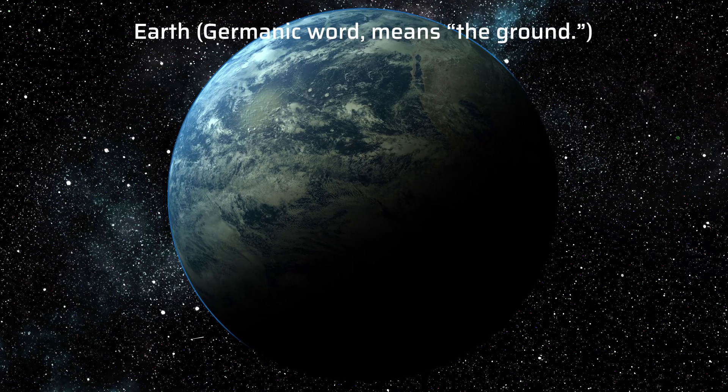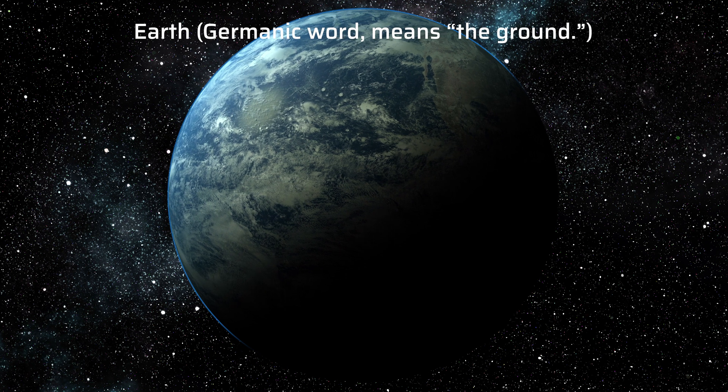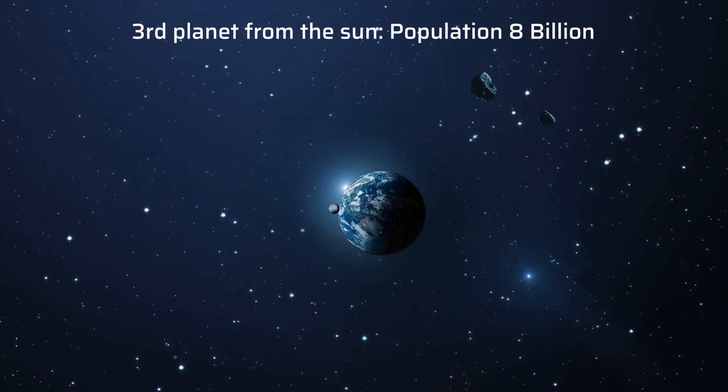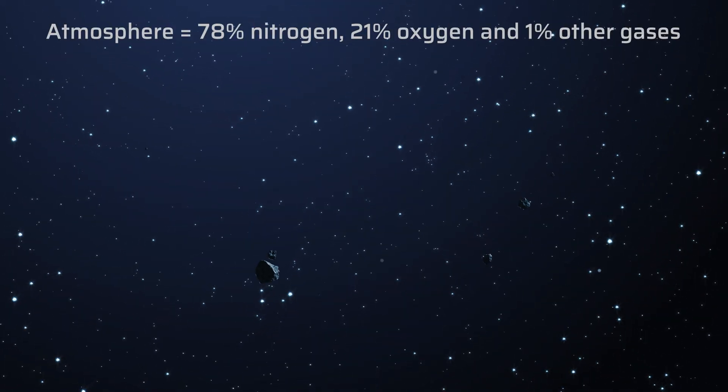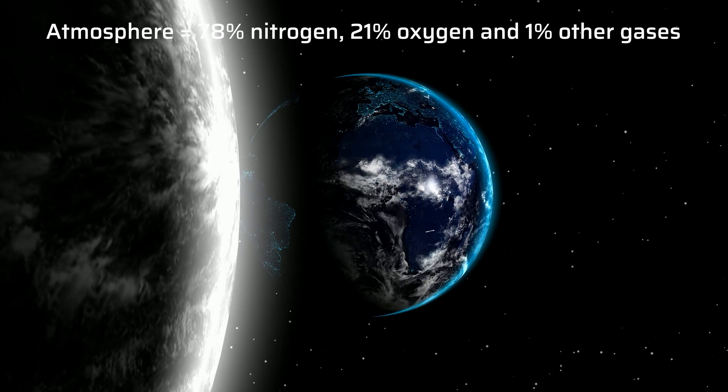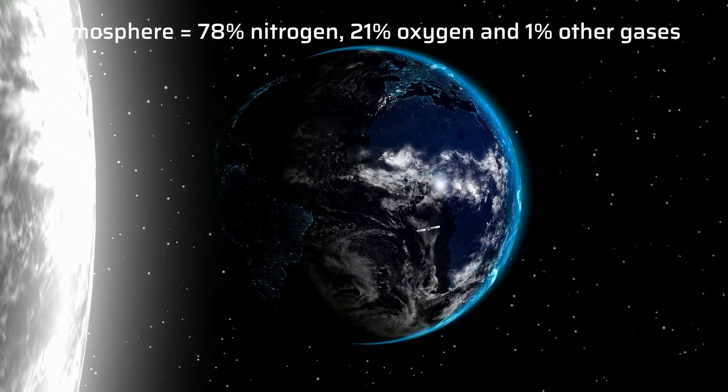Earth. It is a Germanic word which means the ground. It is the third planet from the sun with a population of 8 billion. Its atmosphere is made up of 78% nitrogen, 21% oxygen, and 1% other gases.